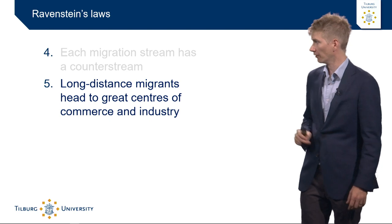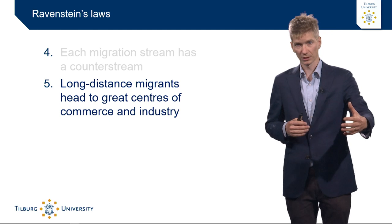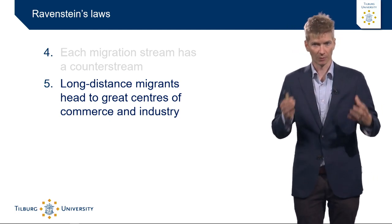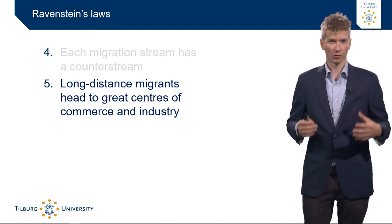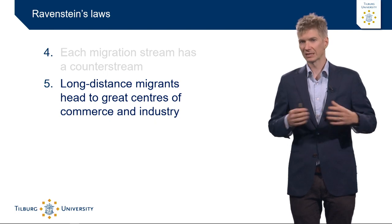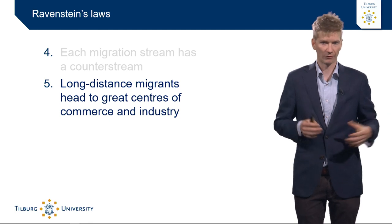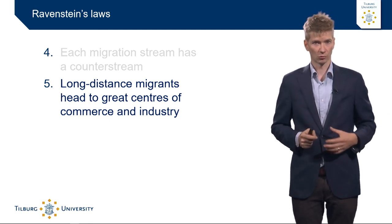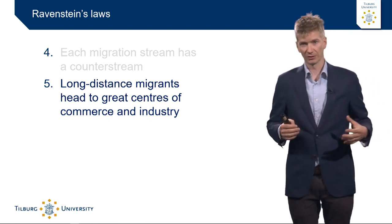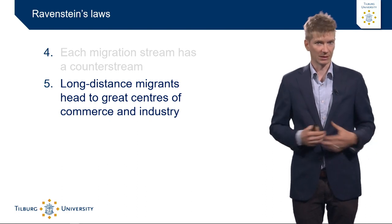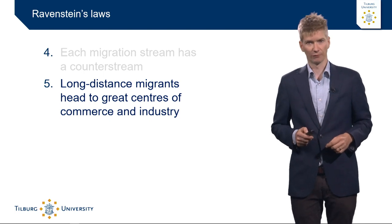The fifth law is that long-distance migrants tend to move to great centers of commerce and industry. When people decide to move a very long distance, they generally will not end up in a rural area or small town, but instead go to big urban areas with a lot of commerce, industry, job opportunities, and higher wages — which are at the core of Ravenstein's laws.